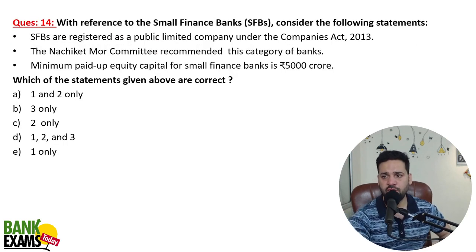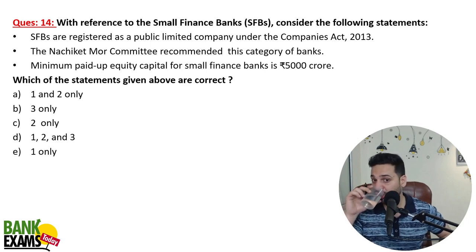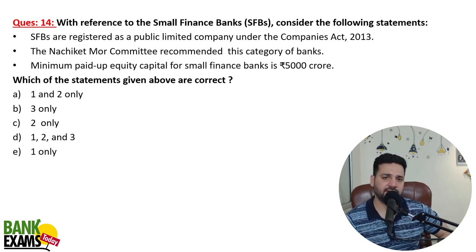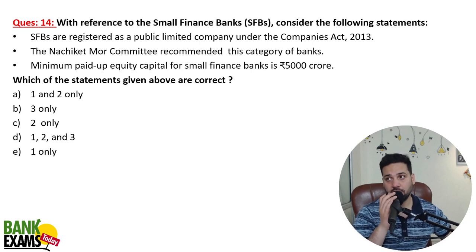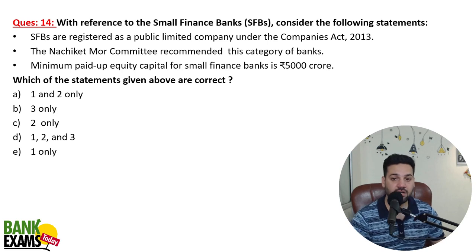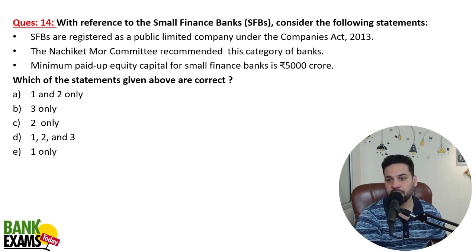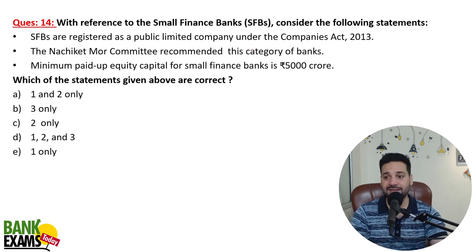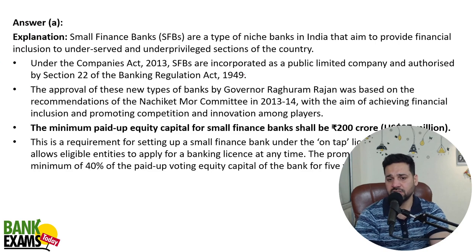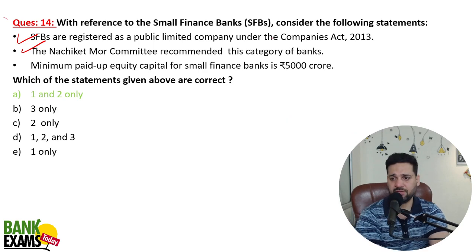With reference to small finance banks, which of the following statements are correct? Small finance banks are registered as public limited companies — which is correct. Many small finance banks are listed in stock markets; Equitas for example is a public limited company. The Nachiket Mor committee recommended this category of bank. Minimum paid-up capital is stated as 5000 crores, but that is incorrect — it is actually 200 crores. So the first and second statements are correct.